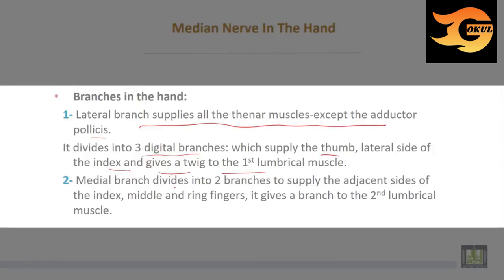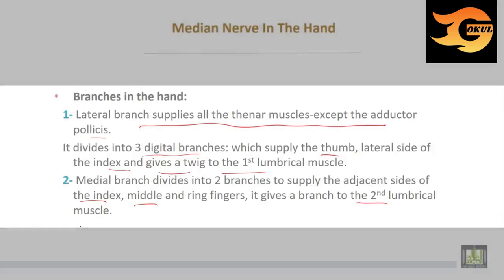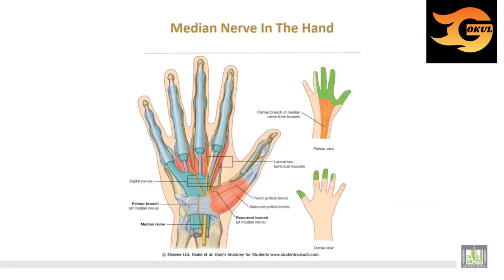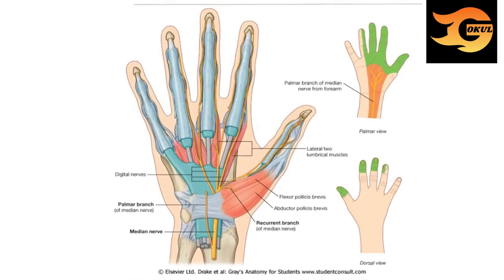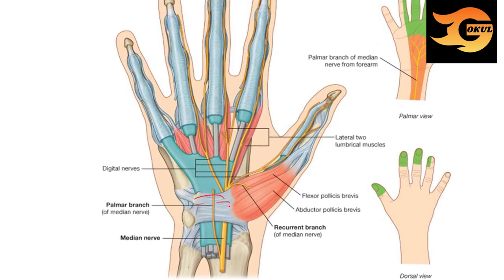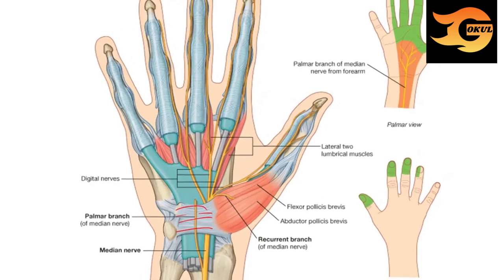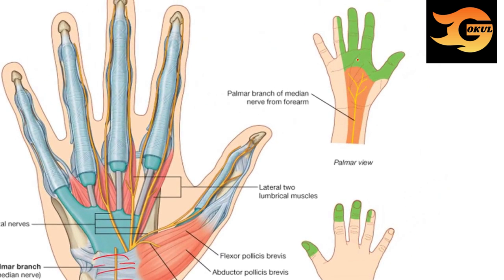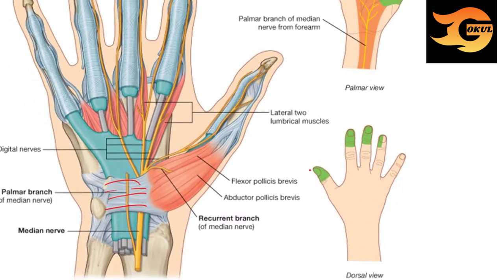The medial branch divides into two branches to supply the adjacent sides of the index, middle, and ring fingers, and gives a branch to the second lumbrical muscle. The median nerve passes deep to the flexor retinaculum inside the carpal tunnel, supplying the lateral two-thirds of the palm and the lateral three and a half fingers up to the dorsum of the terminal phalanges.